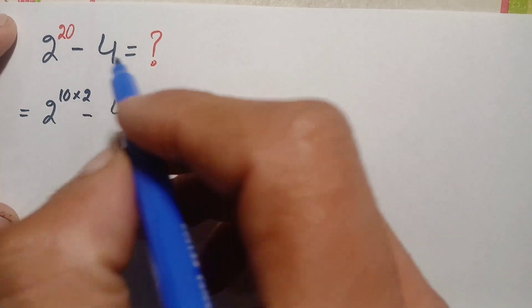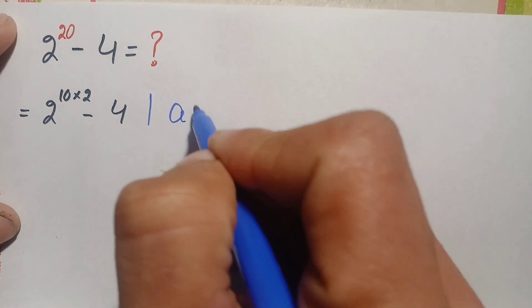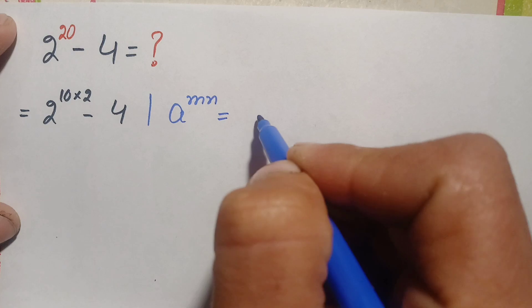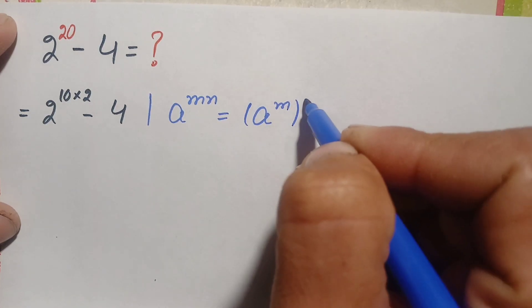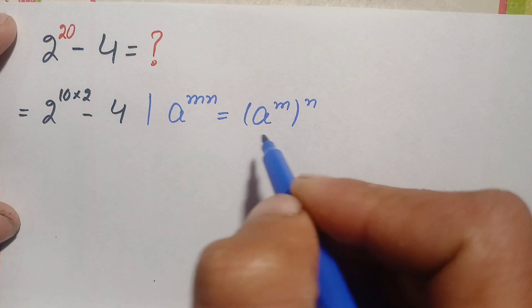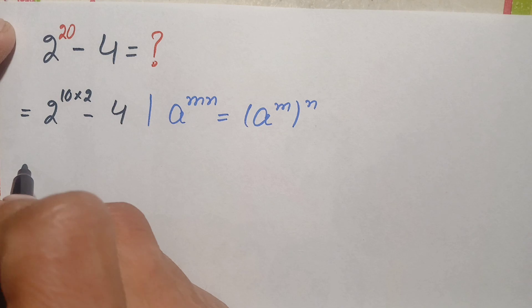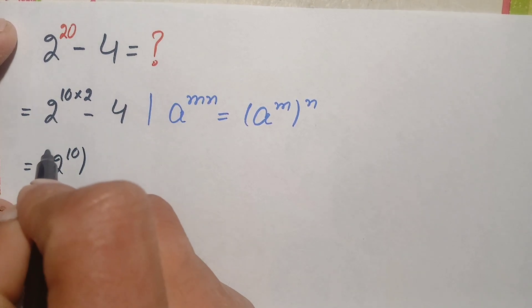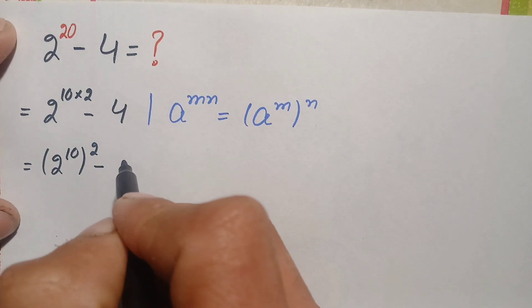Here we will use an exponential identity: a raised to power m times n, which can also be written as a raised to power m, all raised to power n. Using this exponential identity, this number will become 2 raised to power 10, all raised to power 2, minus 4 raised to the square.